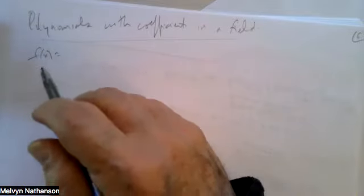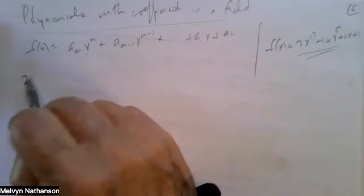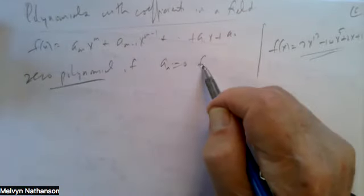For example, f(x) = 7x¹³ − 10x⁵ + 2x + 1 is a polynomial — many coefficients are zero. This is called the zero polynomial if all the coefficients are 0, and a non-zero polynomial otherwise. The degree of a non-zero polynomial is the largest m such that a_m ≠ 0 — the degree of the largest power of x that appears with a non-zero coefficient.